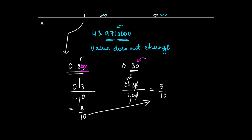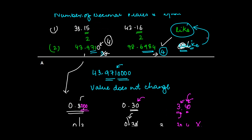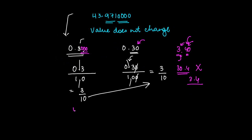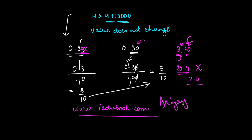Please note: you cannot add a zero after the whole number part. For example, if you have 3.4, you can't add a zero after the 3, because it will become 30.4, which is not equal to 3.4. The zero must be added after the last of the decimal digits. I hope you have understood the concept of like and unlike decimals. Thank you for being with us. You can visit our website www.iedubook.com for more videos on math, science, and accounts. This is RNJ, your educator and tutor.